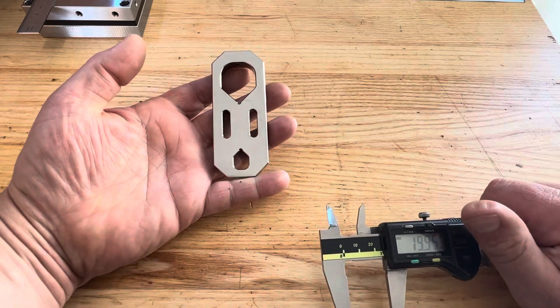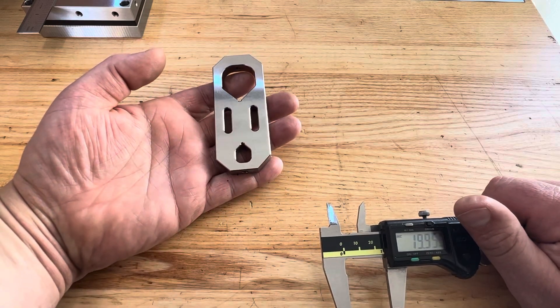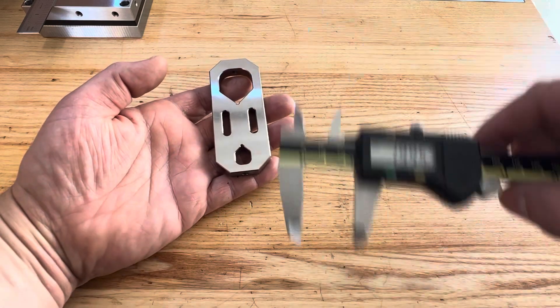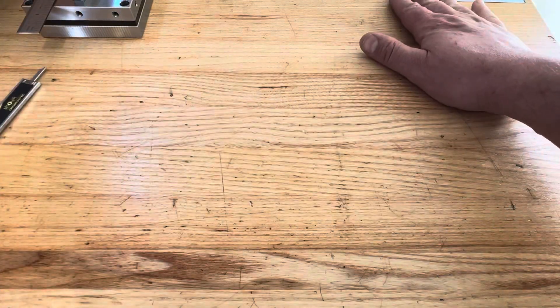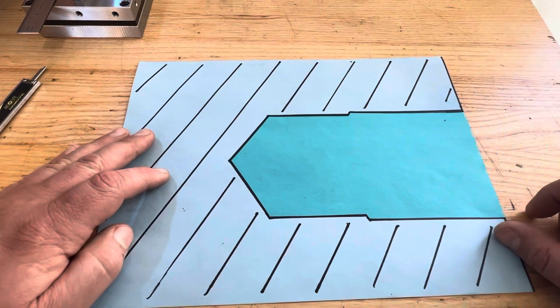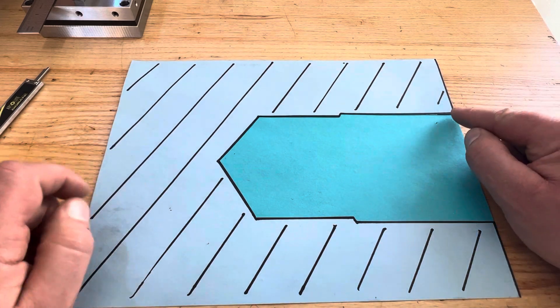This is real handy if you are making an adapter for a CNC mill and you don't know the T-slot spacing. I use that one occasionally. Finally, if you have a hole with a counter bore